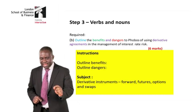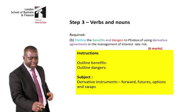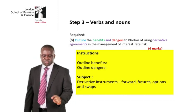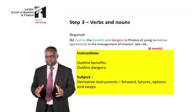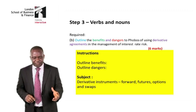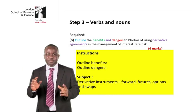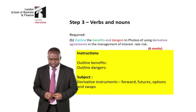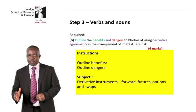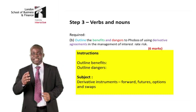Requirement B is telling us to outline the benefits and dangers — that's why I've highlighted them in different colors. So 'outline benefits and dangers' is the instruction, and the derivative instrument becomes the subject matter. The question is: outline the benefits and dangers of the derivative instruments.